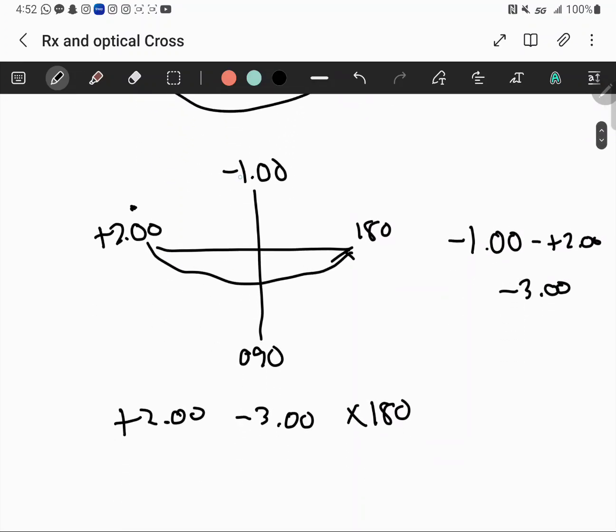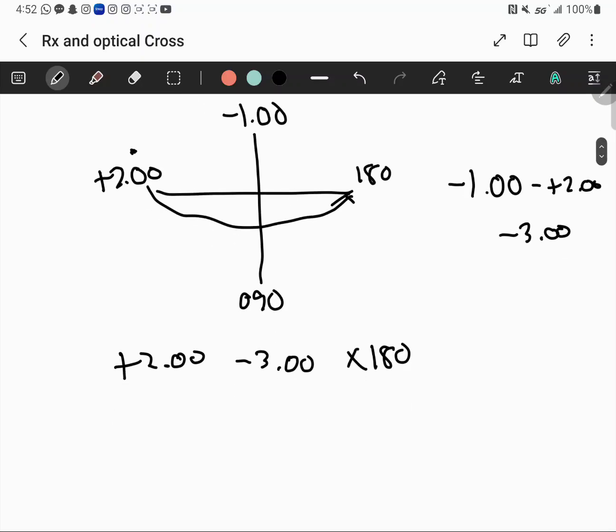If you want plus cylinder form, do the opposite. Pick minus 1 axis 90. Then we do plus 2 minus negative 1, which gives us plus 3.